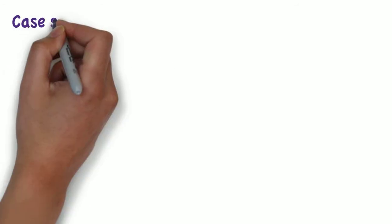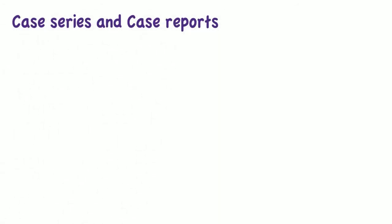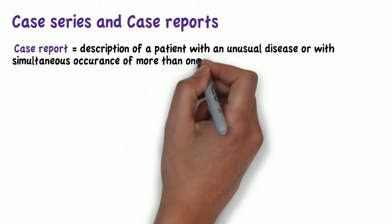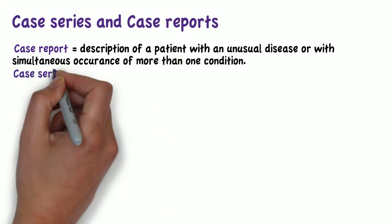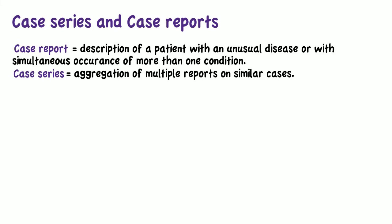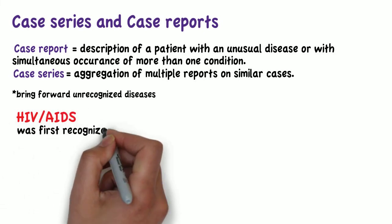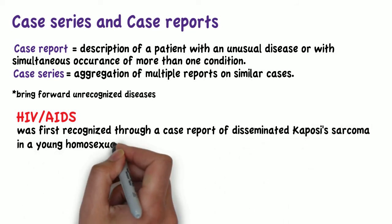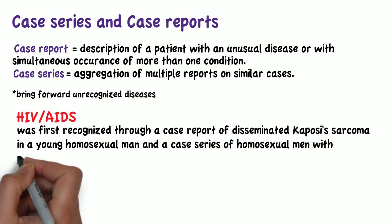A case report refers to the description of a patient with an unusual disease or with simultaneous occurrence of more than one condition. A case series is an aggregation of multiple reports on similar cases. Many are based on personal accounts and therefore are of limited value. However, some bring forward unrecognized diseases — for example, HIV-AIDS was first recognized through a case report of disseminated Kaposi's sarcoma in a young homosexual man and a case series of homosexual men with pneumocystis pneumonia.